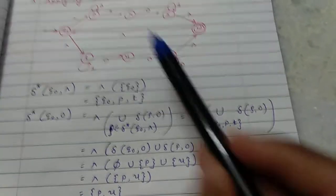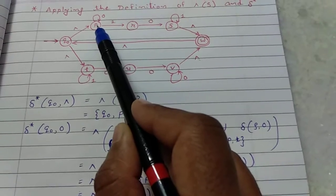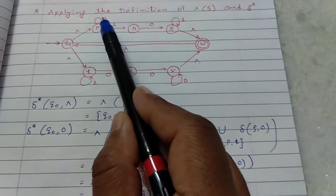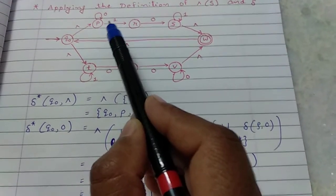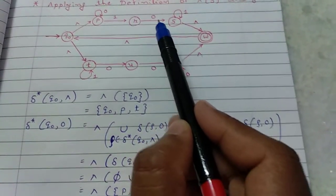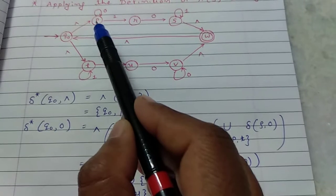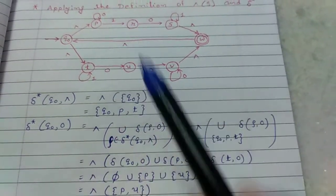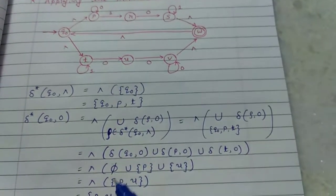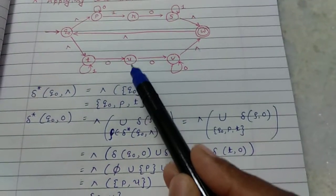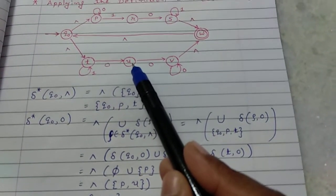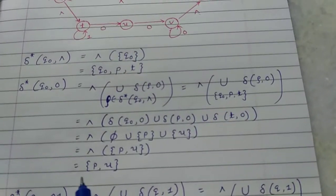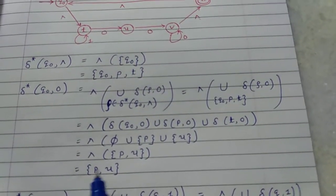First find epsilon closure of P: put P itself, then check for epsilon transitions from P — there are none. So epsilon closure of P is just {P}. Then find epsilon closure of U: there are no epsilon transitions from U either. So delta star of Q0 on input 0 is {P, U}.